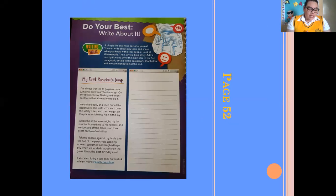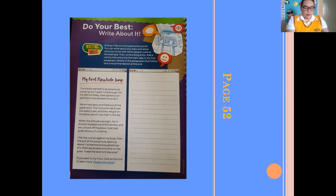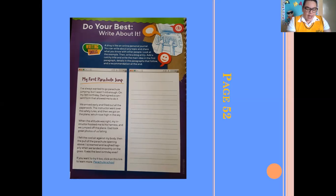A blog is like an online personal journal. You can write about any topic and share what you know with other people. Look at the example, then write a blog entry. Add a catchy title and write the main idea in the first paragraph, details in the paragraphs that follow, and a recommendation at the end.